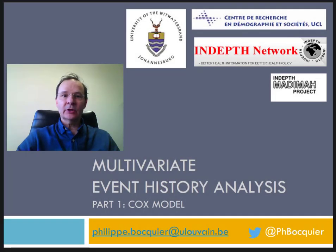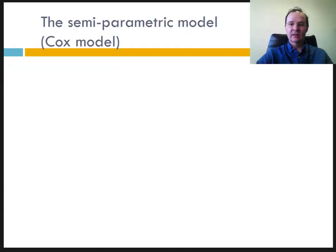This is an introduction to modeling in event history analysis. The first part deals with the famous Cox model. The brilliant idea of David R. Cox in 1972 was to combine two types of analyses, regression and live tables.